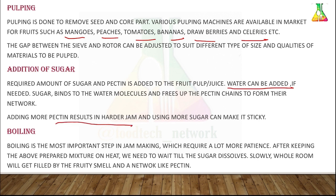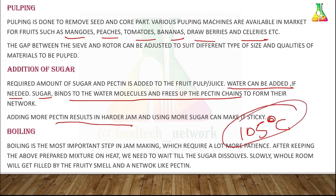Water can be added to the pulp if needed. Sugar binds to water molecules and frees up the pectin chains to form a network. The next step is boiling, which is the most important process. The boiling temperature is 105°C. The mixture must be stirred on heat and we wait until the sugar completely dissolves.